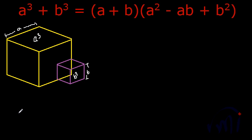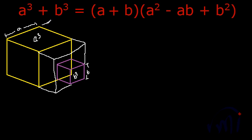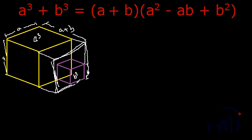To find the volume, I am going to do certain extension on this figure. I am going to extend these lines by B. If I extend these lines by B, I will get a cuboid whose length will be A plus B and its face will be A by A. And from this cuboid, I am going to remove this L-shaped solid to get A cube plus B cube.